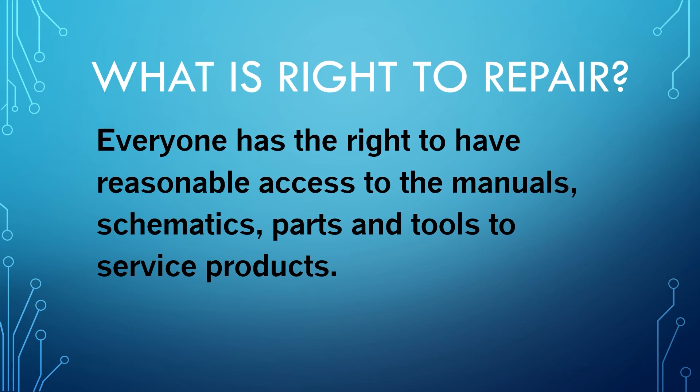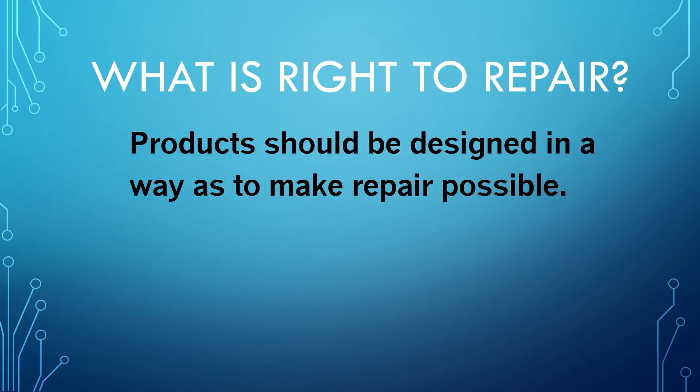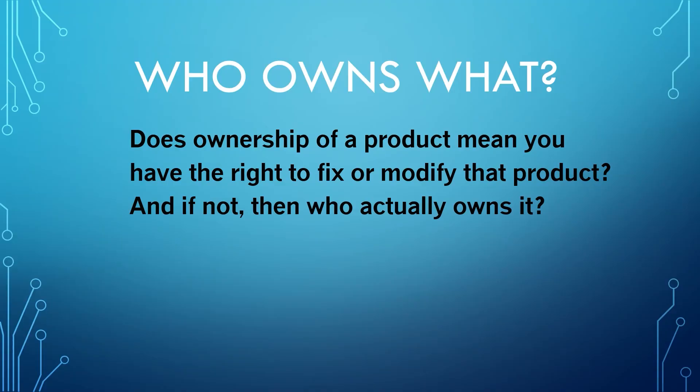So if the screen broke on your phone, you should be able to buy that screen from the manufacturer. And products should be designed in a way as to make repair possible in the first place — for example, not making wear items like batteries or tires unreplaceable. So really what right to repair is asking is: who owns what? Does ownership of a product mean you have the right to fix or modify that product? And if not, then who actually owns it?